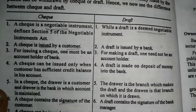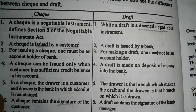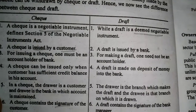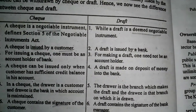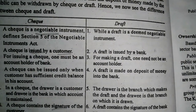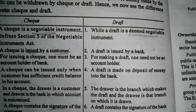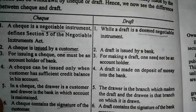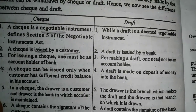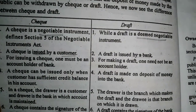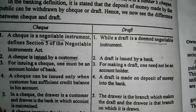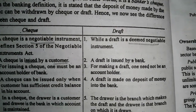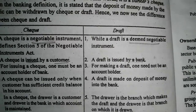Third point: for issuing a cheque, one must be an account holder of a bank. Whereas for making a draft, one need not be an account holder. Fourth point: a cheque can be issued only when the customer has a sufficient credit balance in his account, whereas a draft can be made on deposit of money into the bank.